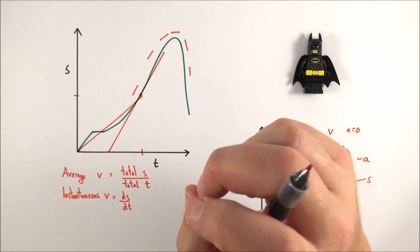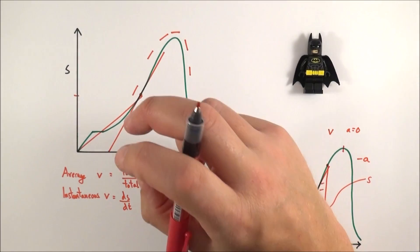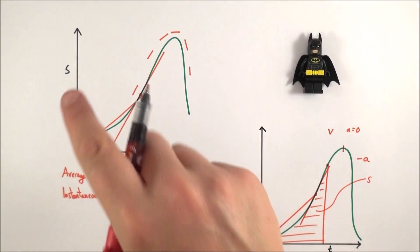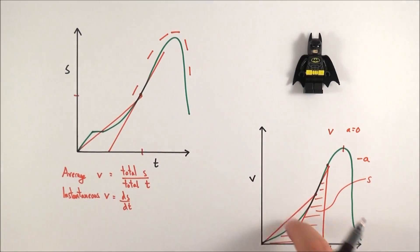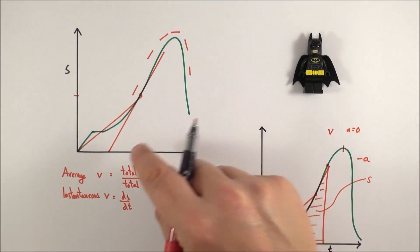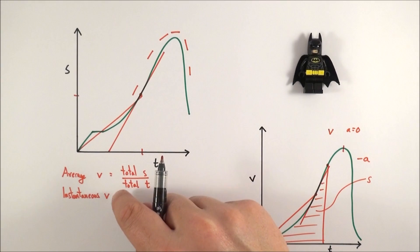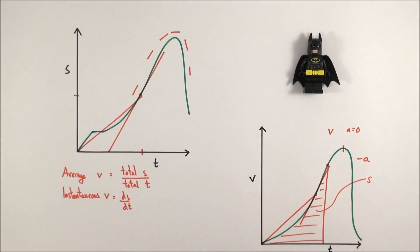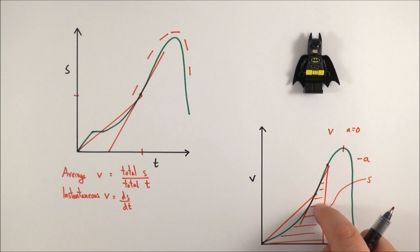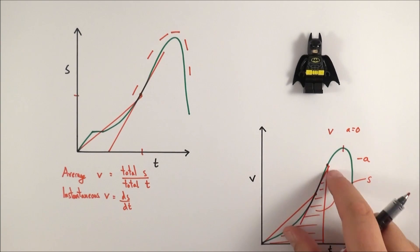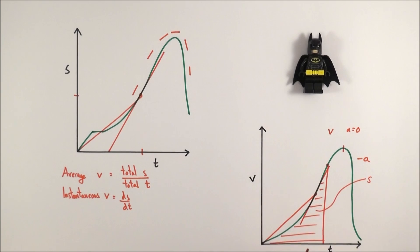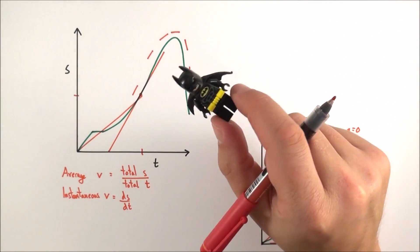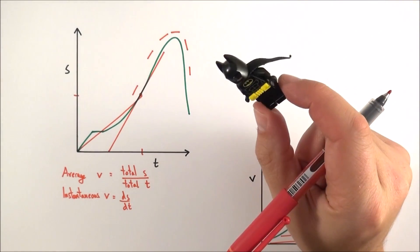So that's a bit more information about these tricky points when looking at a displacement-time graph or a velocity-time graph — how we can work out either the average or the instantaneous values of velocity or acceleration, and also what the area underneath the curve between the curve and the x-axis actually means. Anyway, that's going to be really useful as you do more questions on this in physics.